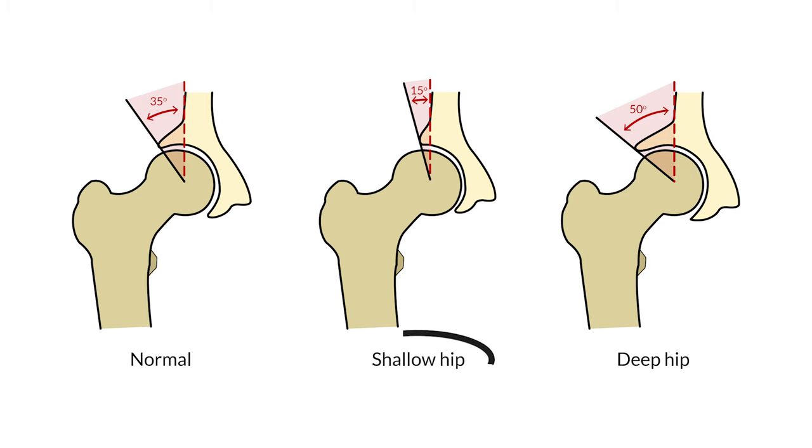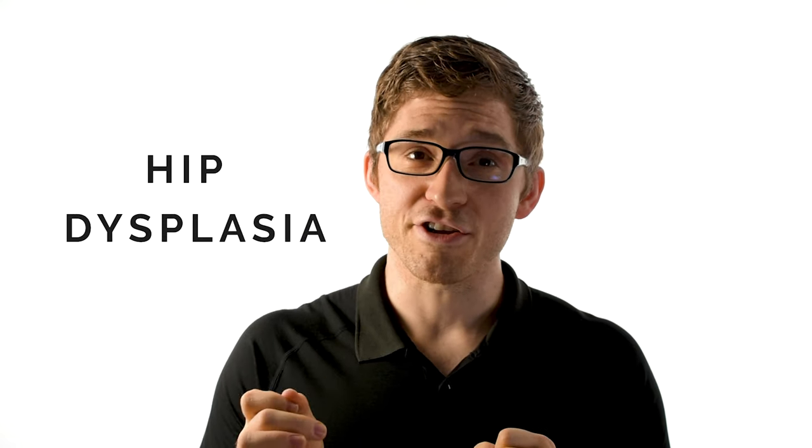Having a shallow hip socket means less coverage, more mobility, and more force from the surrounding musculature. People with shallow hip sockets are more susceptible to joint degeneration due to higher pressure inside the joint, and they tend to enjoy low-force activities like yoga. A severely shallow hip socket is often called hip dysplasia.